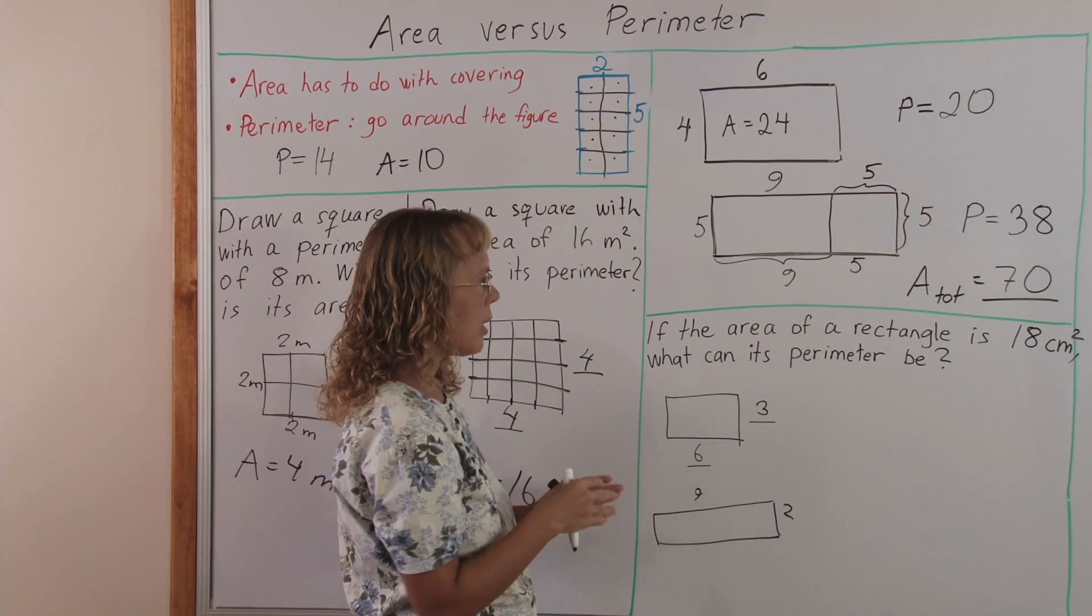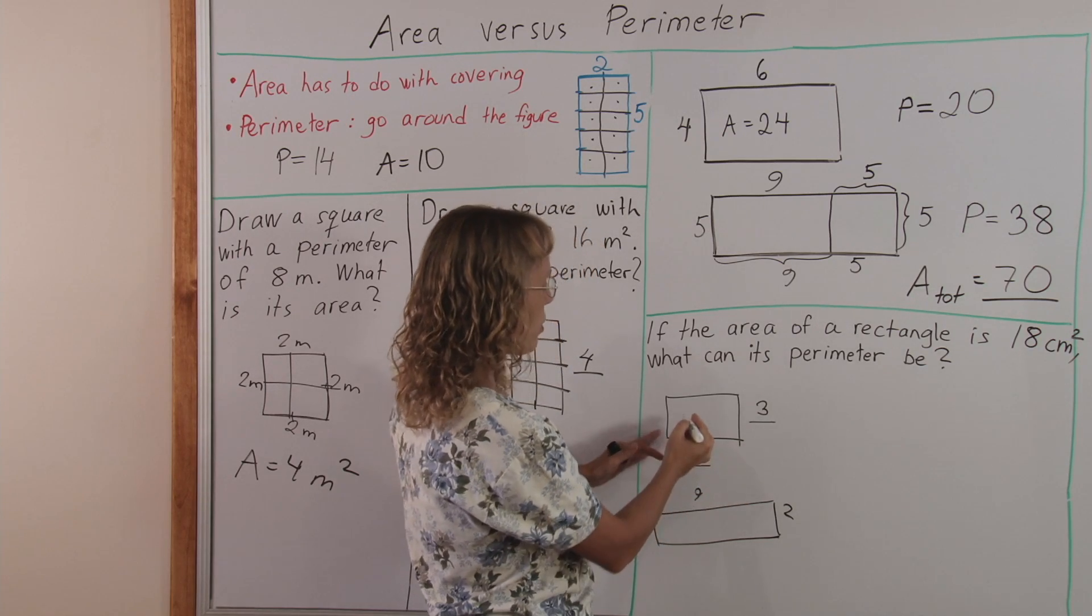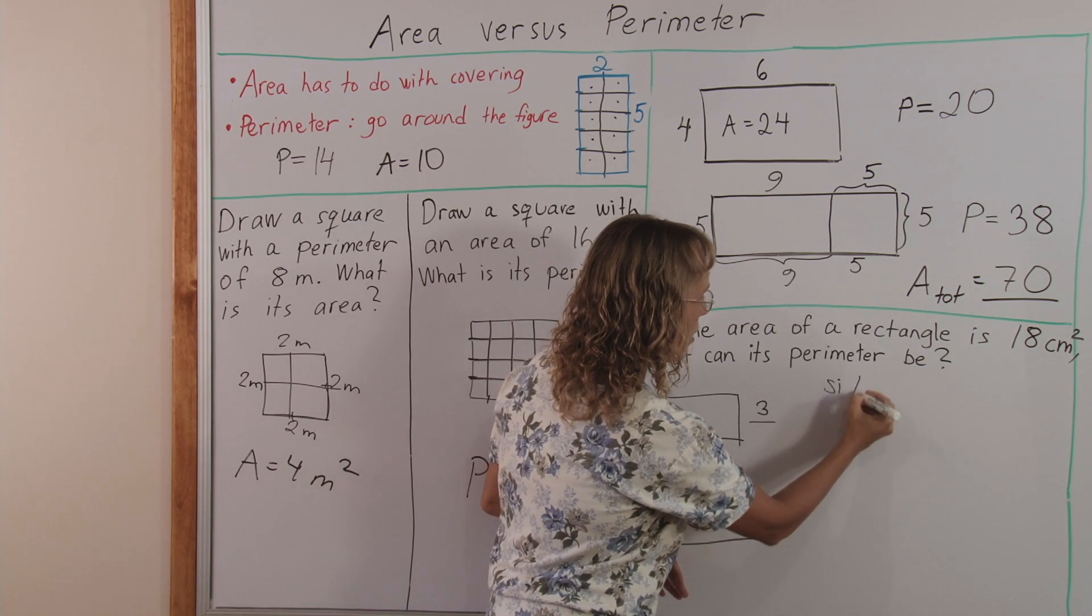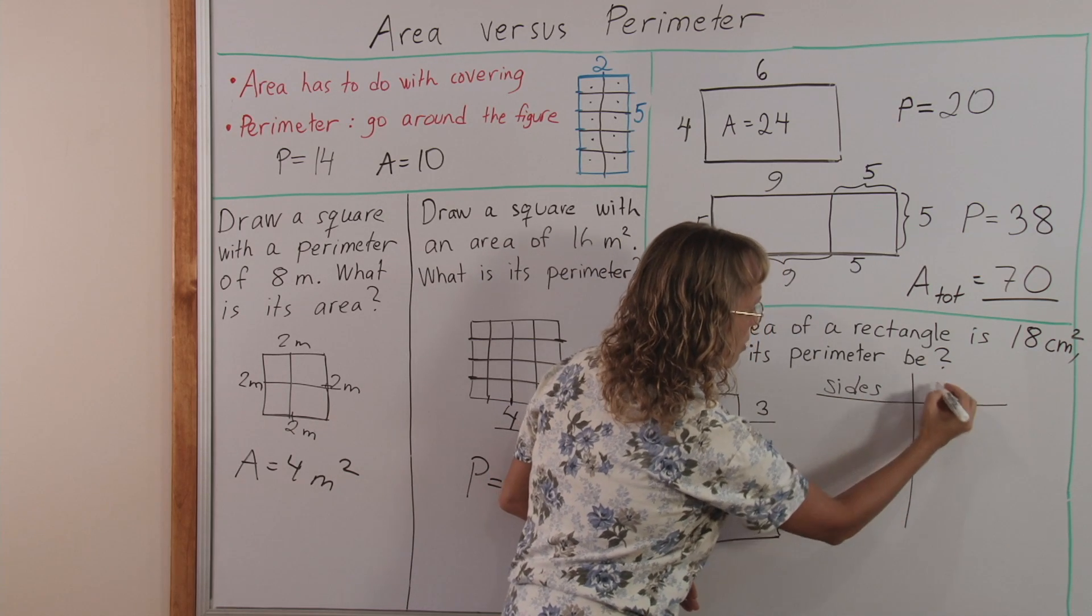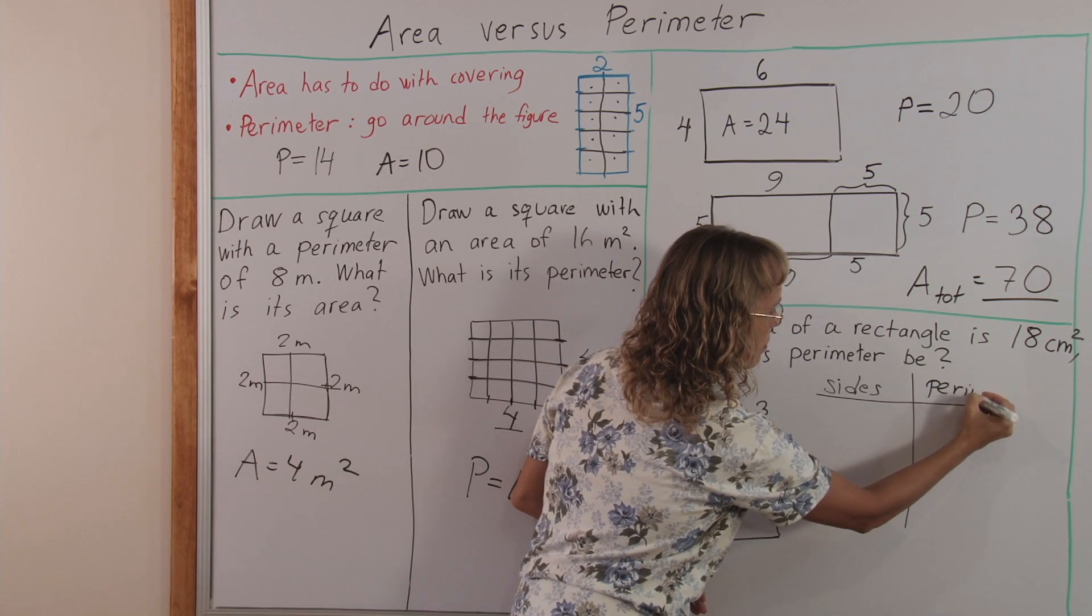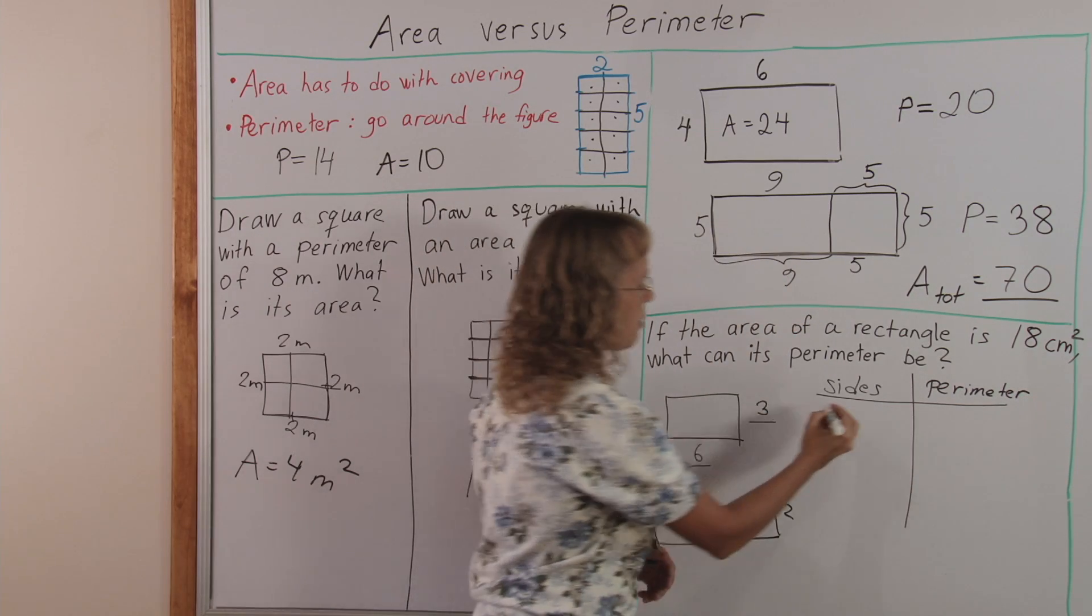Different numbers multiplied give me eighteen. And the perimeter, let me make a table here, that if the sides are certain ones, then what's the perimeter? The sides could be three and six, for example.